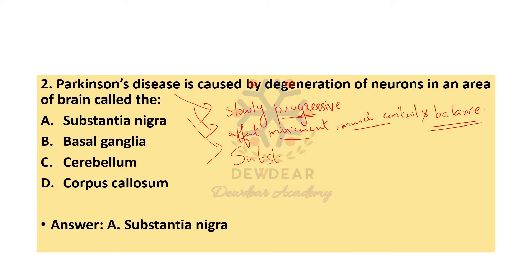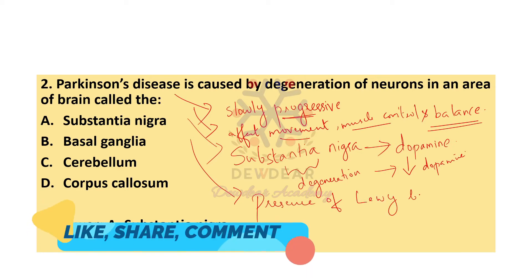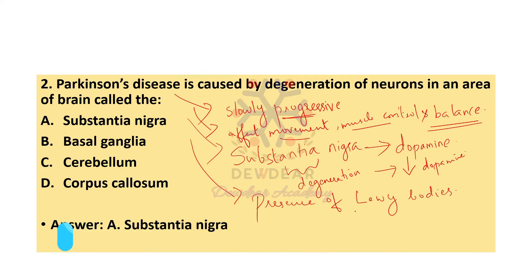There is degeneration of nerves in the substantia nigra. The nerve cells in the substantia nigra produce a chemical known as dopamine. In Parkinson's disease, degeneration leads to decreased dopamine production. The dopaminergic cell loss is found in the substantia nigra of the midbrain. Another important feature is the presence of Lewy bodies.